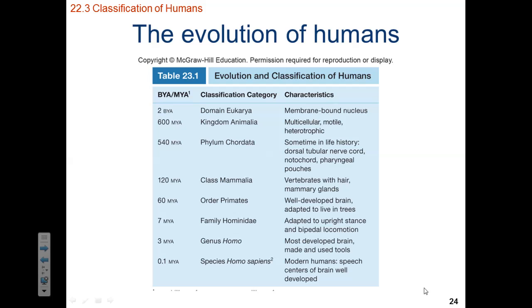Hi class, let's continue our discussion on human evolution. From your textbook, Table 23.1, we can see that there have been, within the fossil record, organisms that resemble current modern human beings.